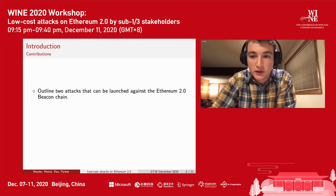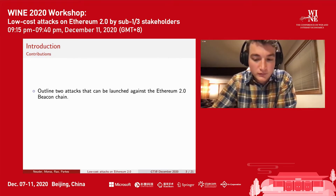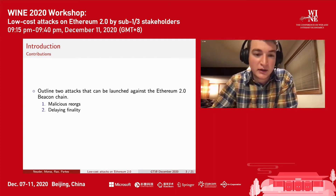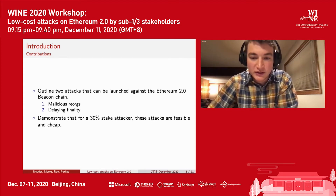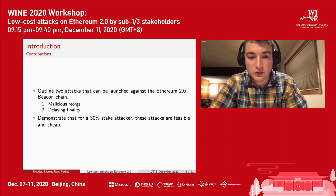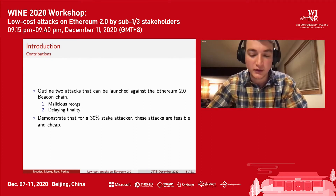The contributions of this paper are as follows. We outlined two attacks that can be launched against the Ethereum 2.0 Beacon Chain. The first attack allows an attacker to execute malicious reorgs, and the second delays finality. We demonstrate that for a 30% stake attacker, these attacks are feasible and cheap. This 30% number is relevant because the stated security threshold for the Beacon Chain is that no attacker controls more than one-third of the total stake. So we show that a sub-one-third stake attacker can still launch these attacks with high probability and for relatively cheap.